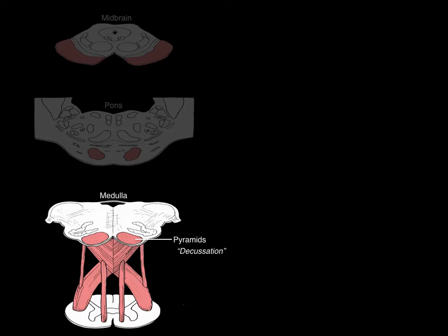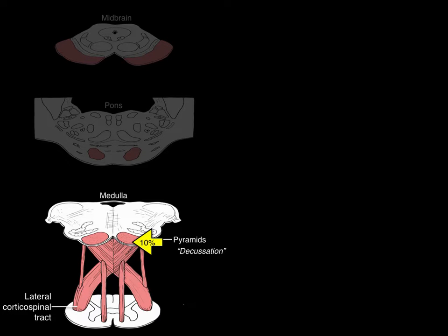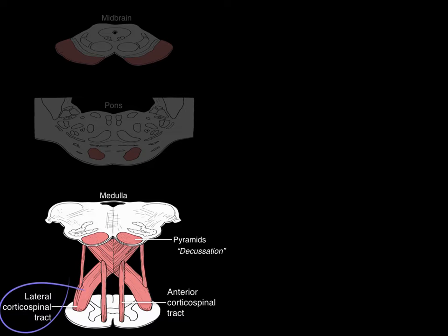At the pyramids is where decussation occurs — meaning to cross over. 90% of all upper motor neurons, once they hit the pyramids, decussate at the bottom of the pyramids to the contralateral side, forming what is known as the lateral corticospinal tract in the white matter of the spinal cord. 10% stay ipsilateral, forming the anterior corticospinal tract. Since 90% of fibers cross, that's what we focus on clinically as the most relevant.